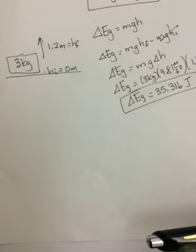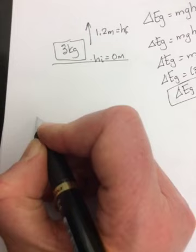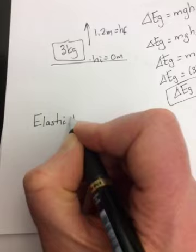There is another type of potential energy, and I'm just going to mention it, and then we'll come back to it the next day. The second type of potential energy, our third type of energy in total, is elastic potential energy.